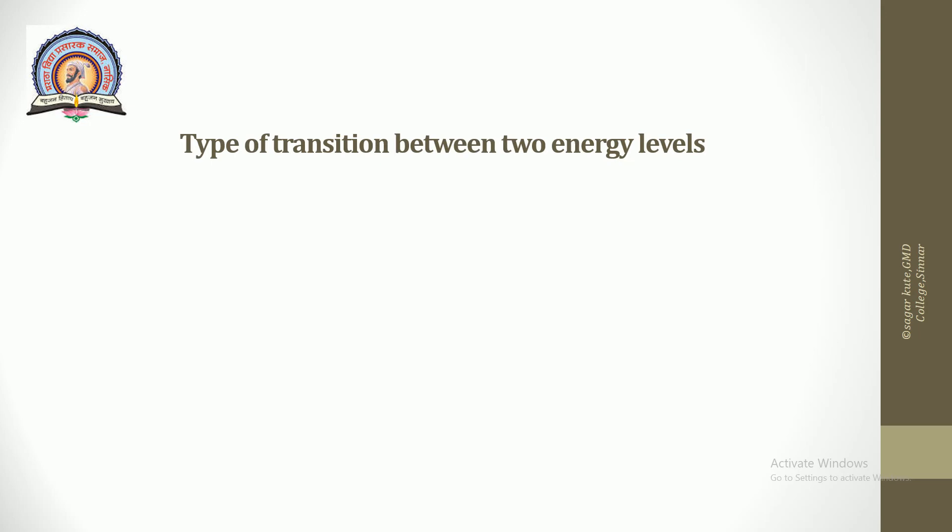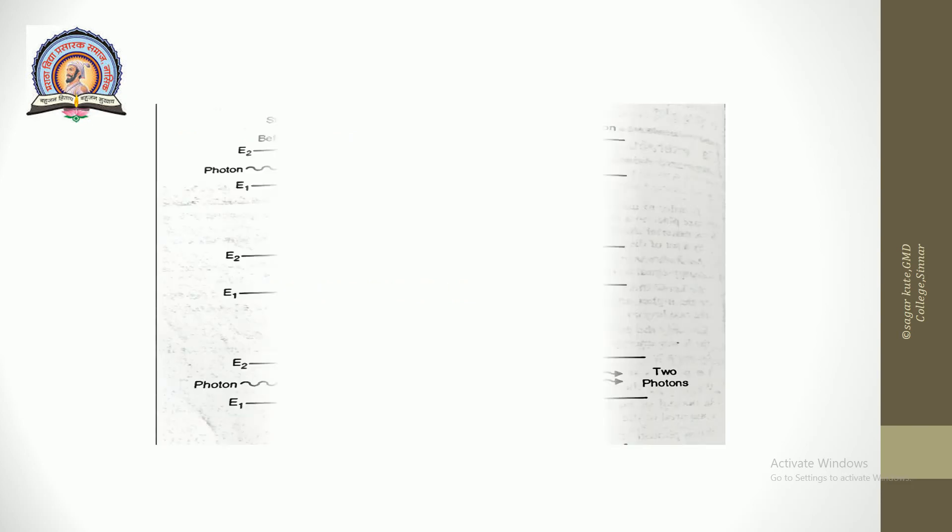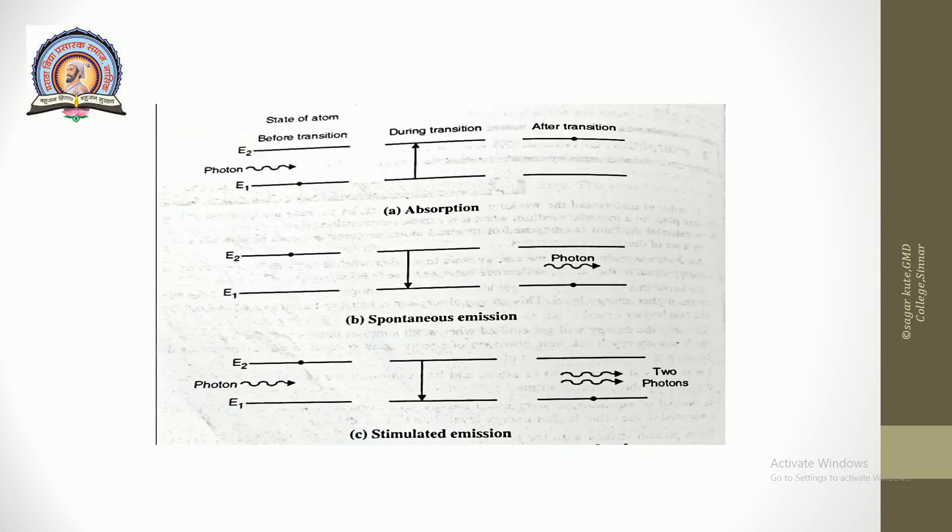Now the types of transitions between two energy levels: first type is absorption, second one will be spontaneous emission, and third one will be stimulated emission. Now these three types will be discussed. This diagram indicates the absorption, spontaneous, and stimulated emission.